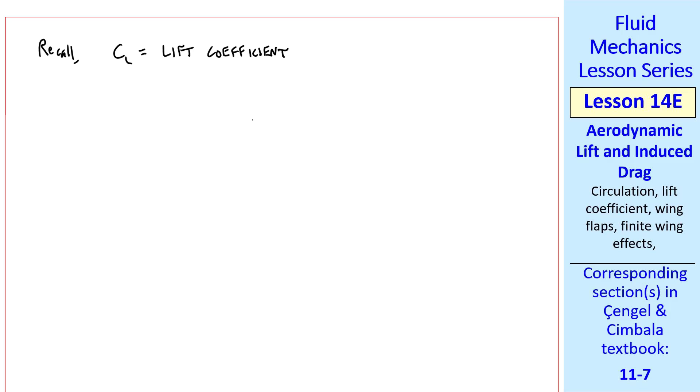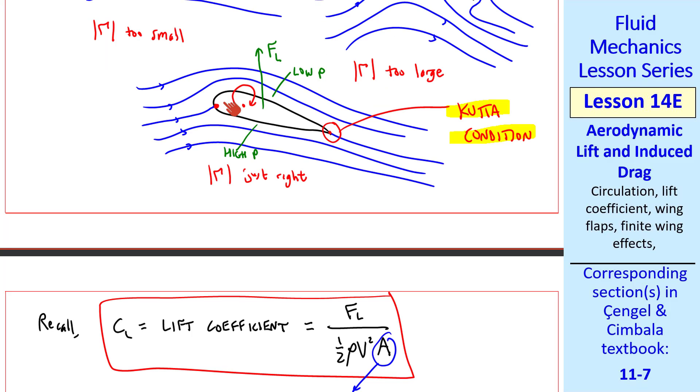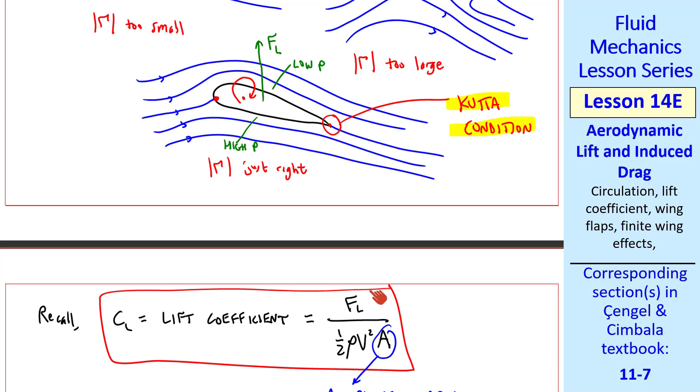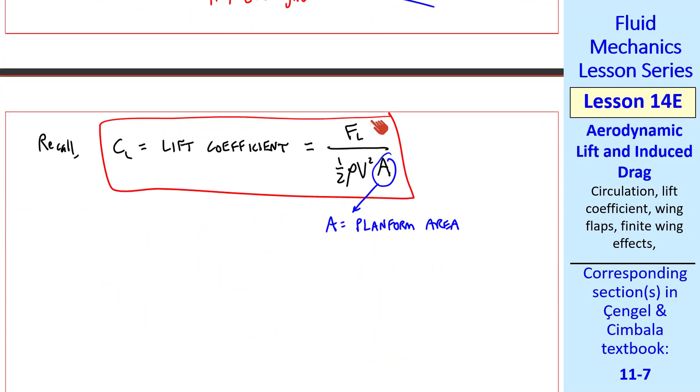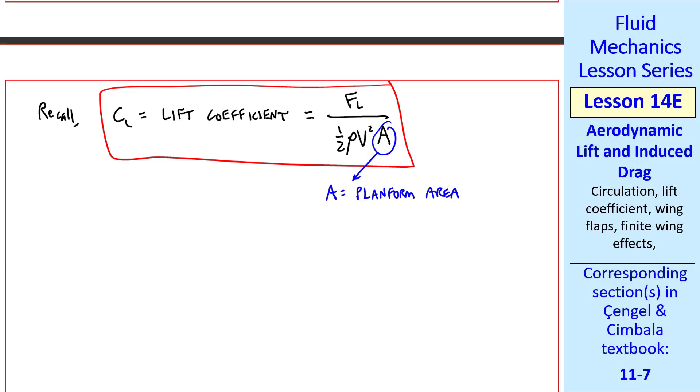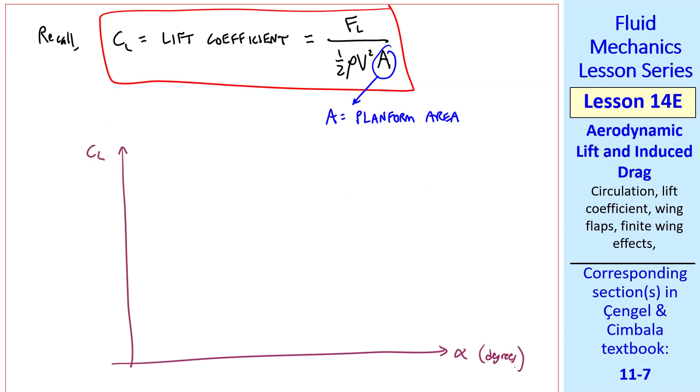Recall that CL is the lift coefficient, defined as FL over one-half rho v squared A, where A is the planform area, which is the area looking from above, which is typically the chord times the distance into the page. And we're talking about two-dimensional airfoils here, so we're typically talking about per unit length. If we sketch CL as a function of alpha, our potential flow approximation becomes a straight line.